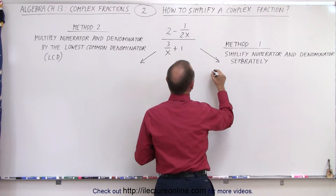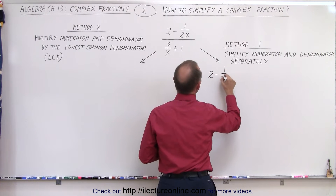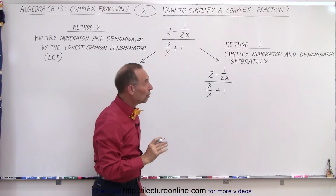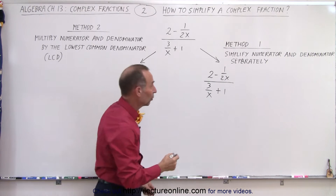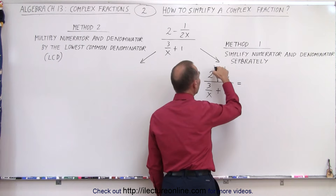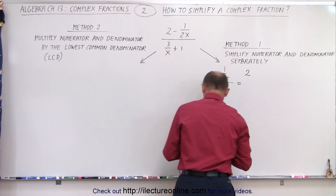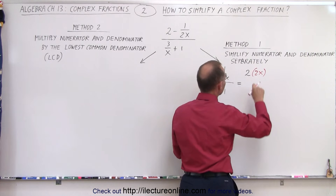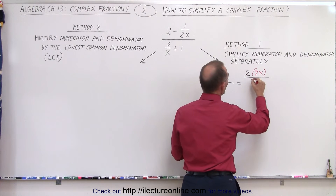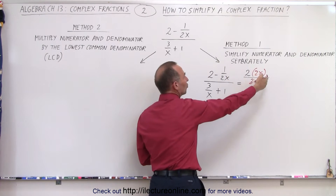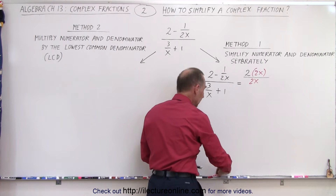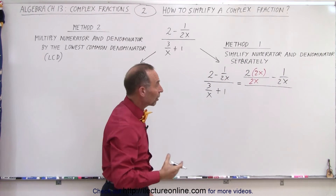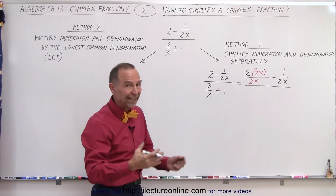In this case, we have the complex fraction (2 minus 1 over 2x) divided by (3 divided by x plus 1). Looking at the numerator, the lowest common denominator is 2x. So we're going to multiply the 2 by 2x over 2x — so 2 times 2x divided by 2x is still 2 — and then subtract 1 over 2x. Now both denominators in the numerator are common, so we can write them over the same common denominator and subtract the two terms.